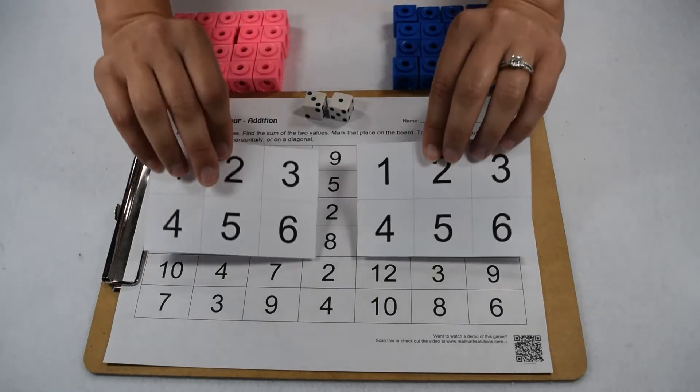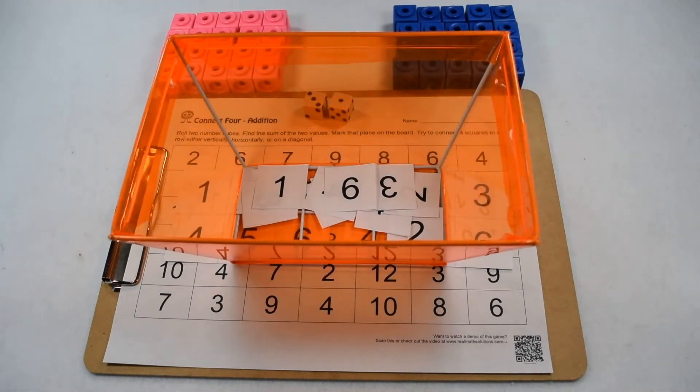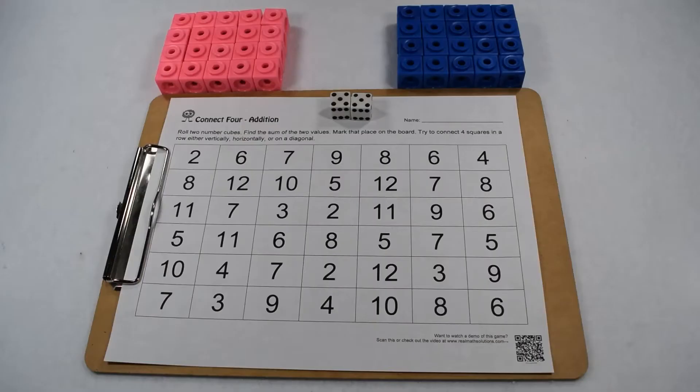If you don't have dice, we've included sets of numbers numbered one through six that you can cut apart, put in a bin, and have students draw from the bin instead. Now let's take a look at how to play.